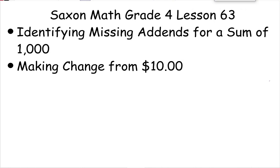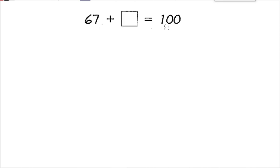Hello, everyone. Today's lesson is lesson 63: identifying missing add-ins for a sum of 1,000 and making change from $10. Several lessons ago, we learned how to find a missing add-in for a sum of 100 and how to make change for a dollar.